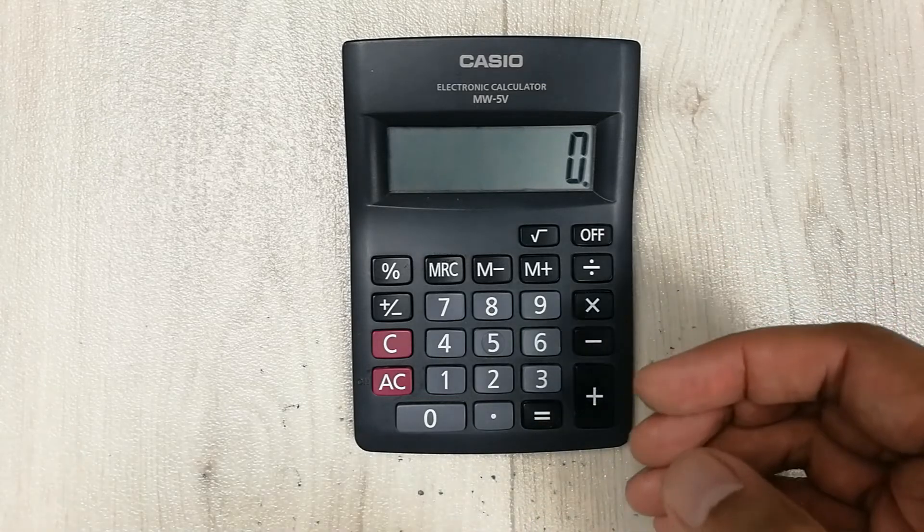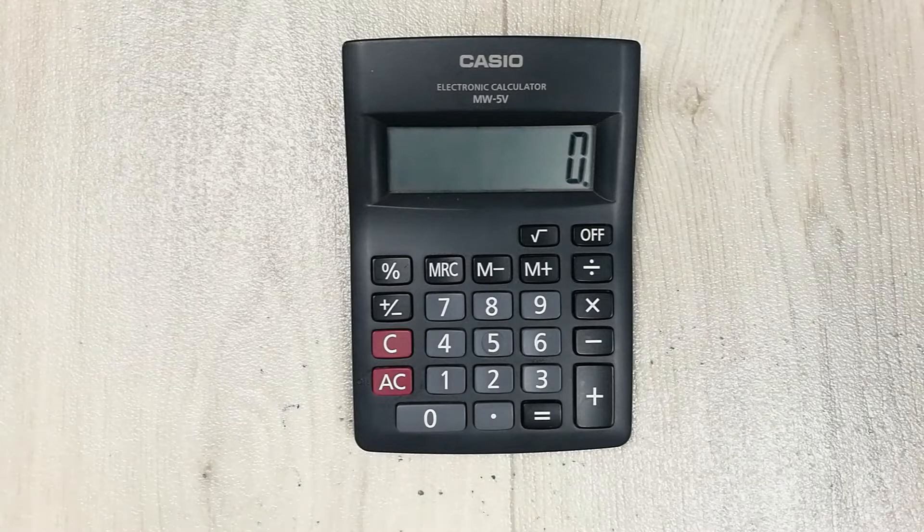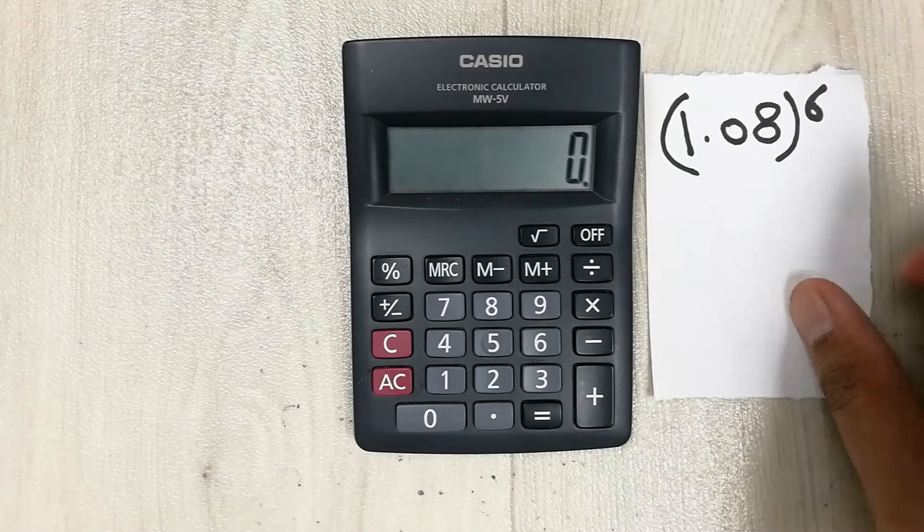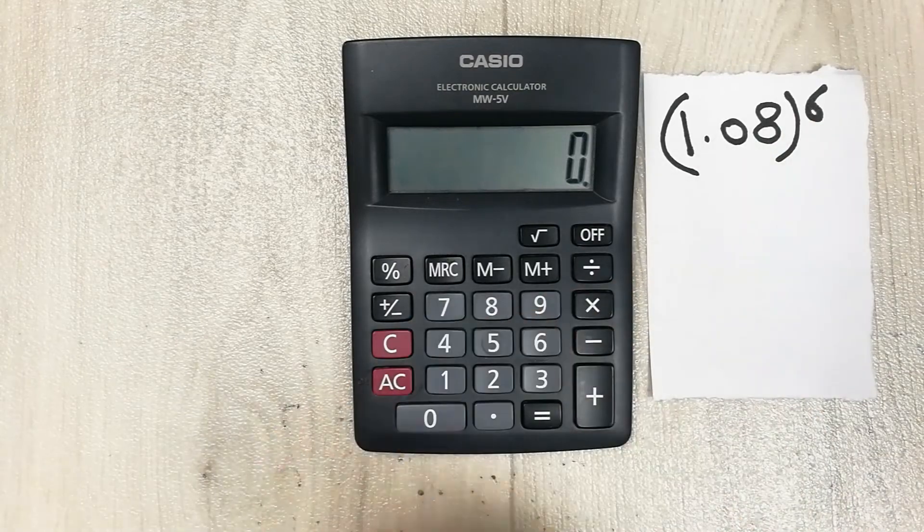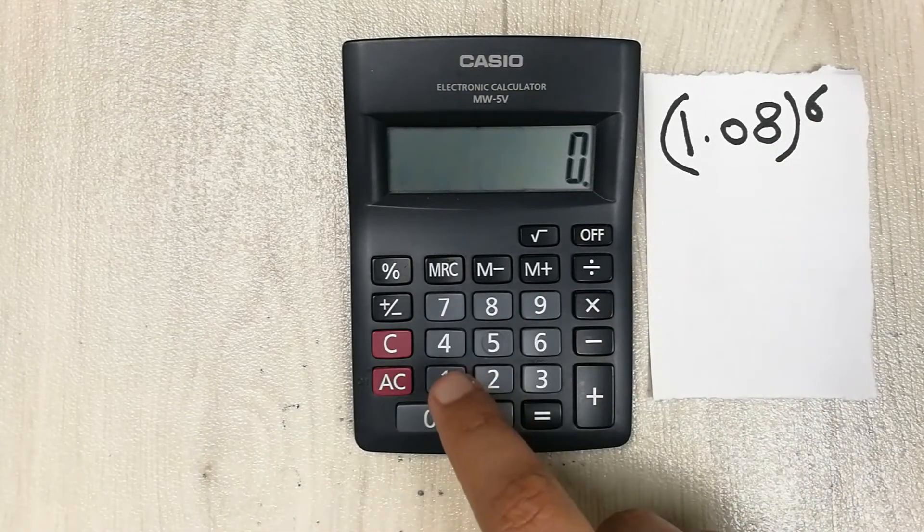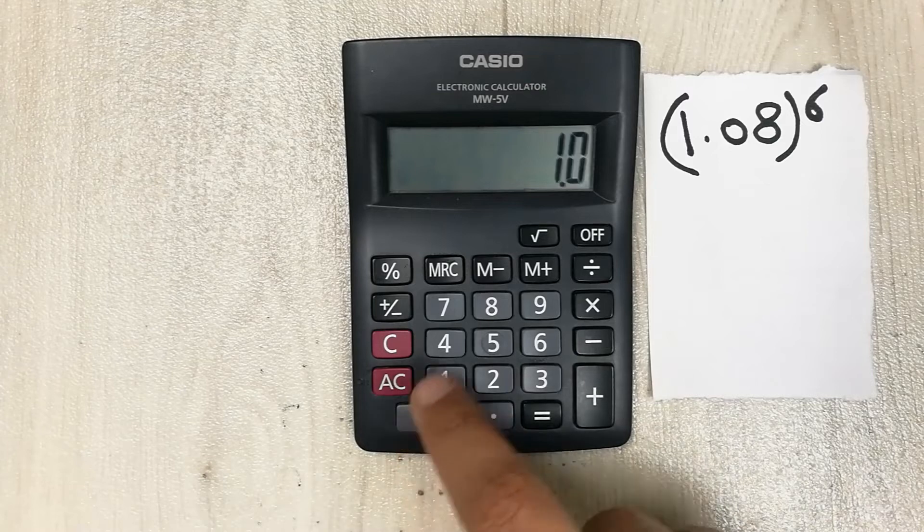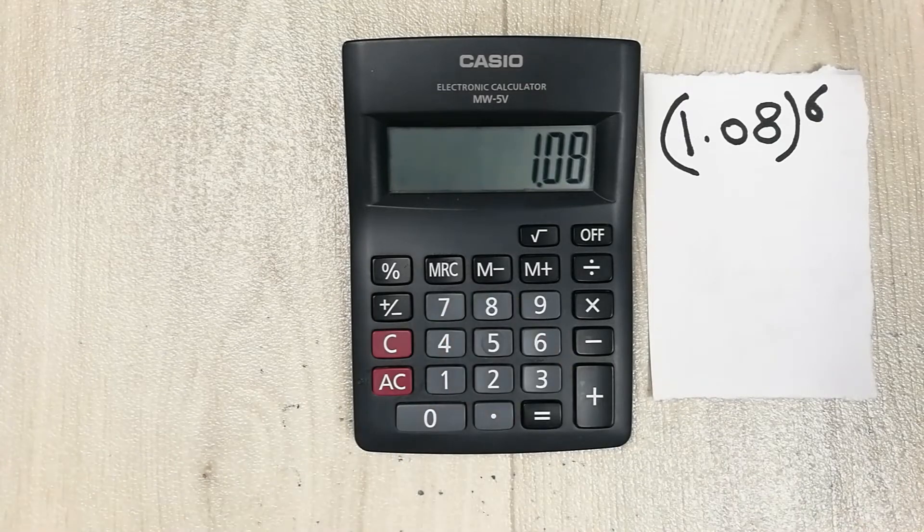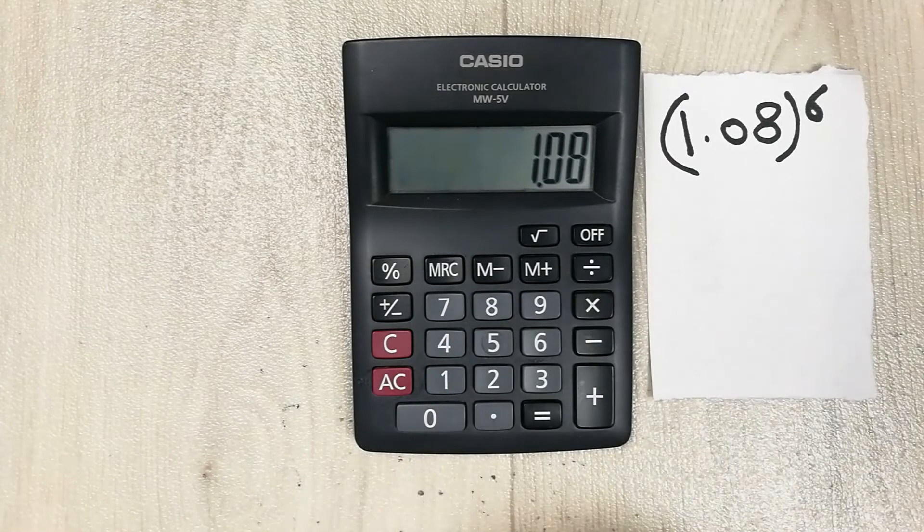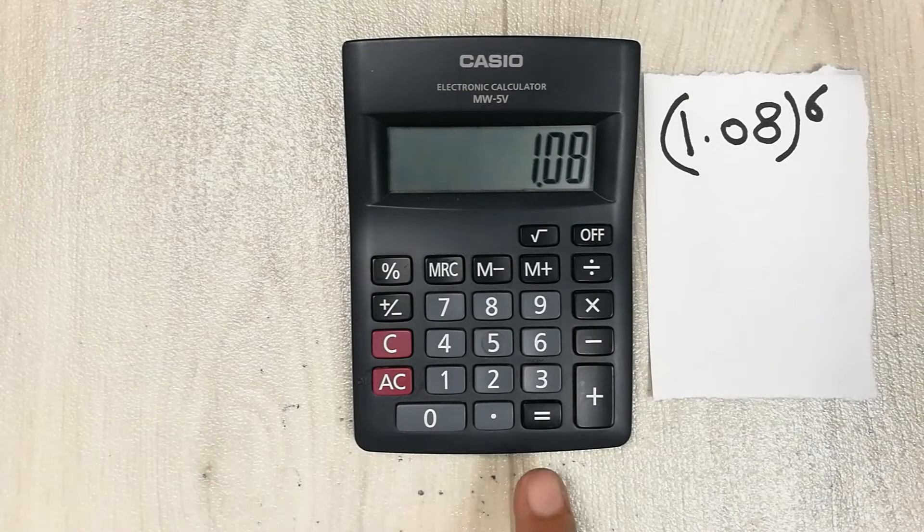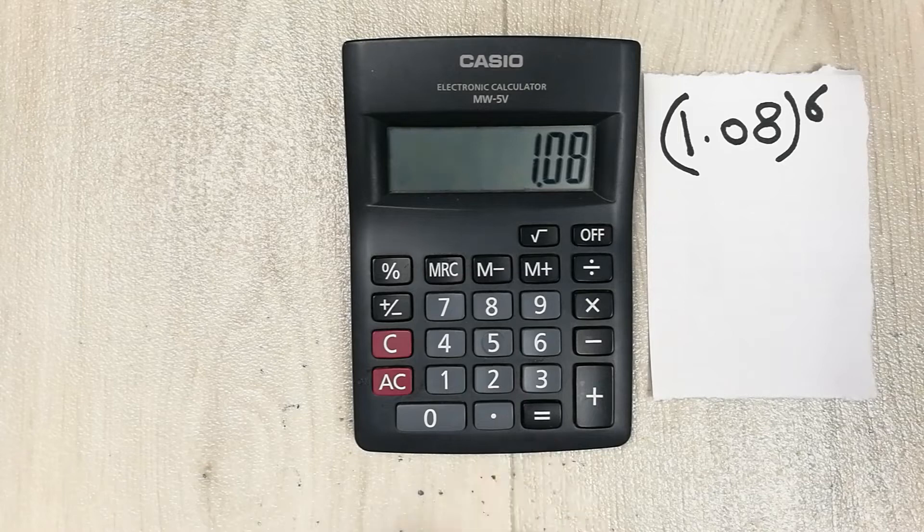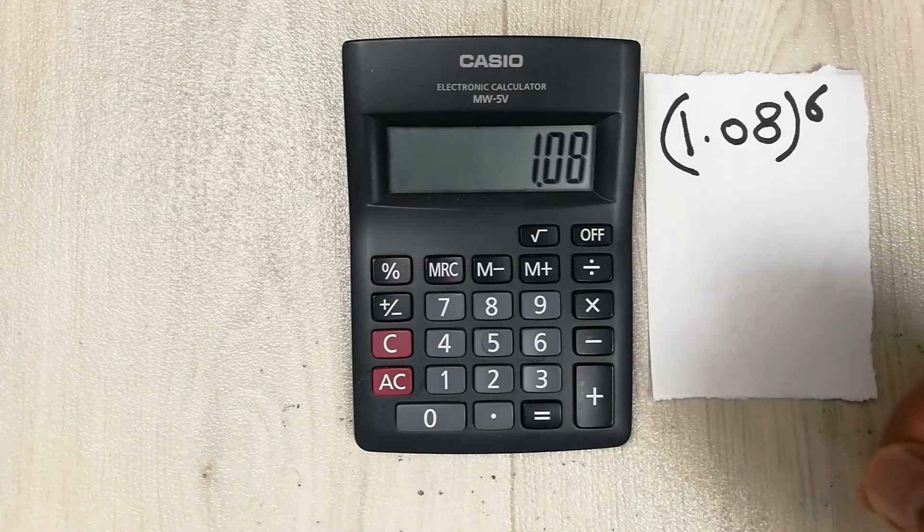So guys, I use another calculator to show you the second method. For example, we have this value which is 1.08 raised to the power 6. Now how to find it out on our basic calculator? So we type 1.08, and then we have to press this multiply button only one time. And then we have to press this equal button five times.